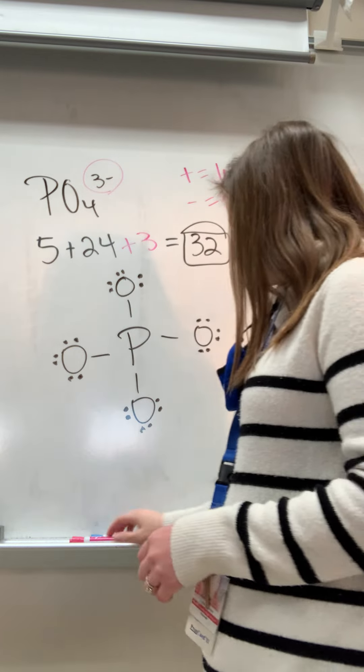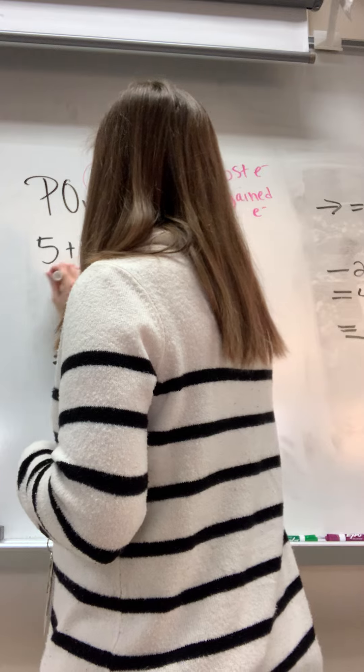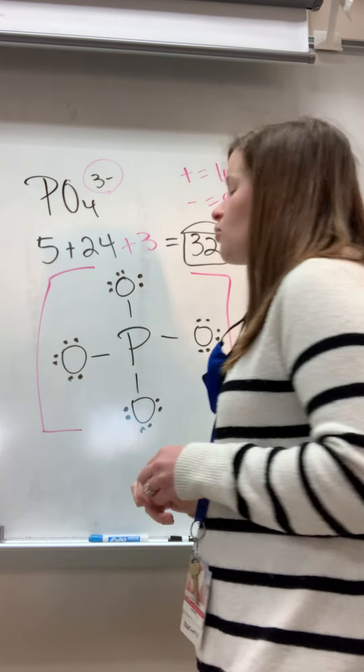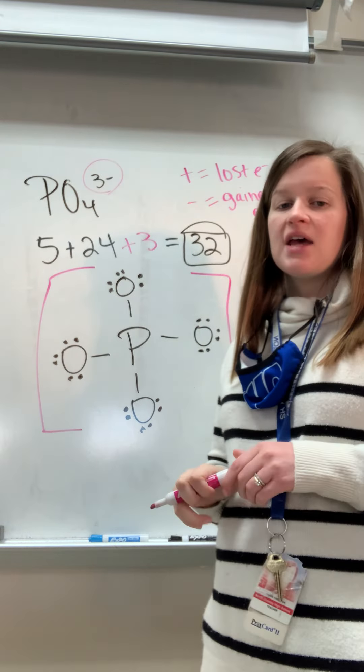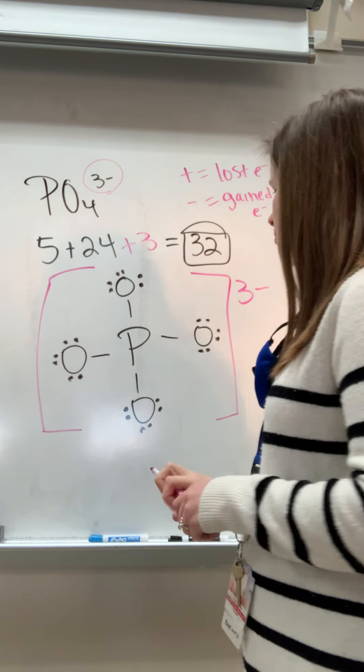So our last step for a polyatomic ion is to do brackets because this isn't normal. One phosphorus with four oxygens, it has three extra electrons. And so we have to show that by doing brackets.